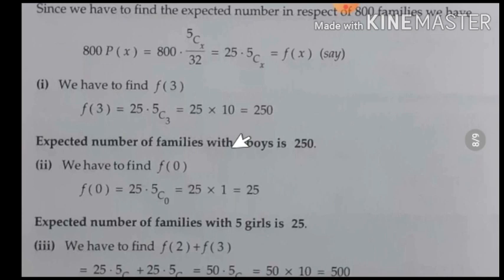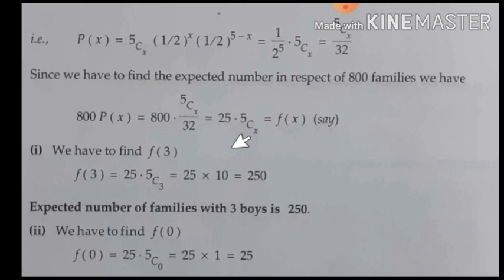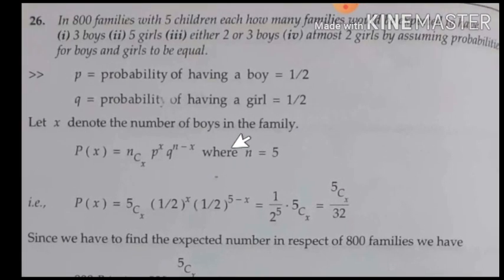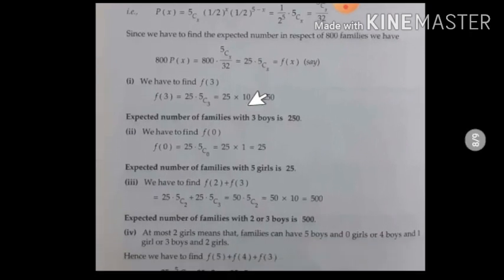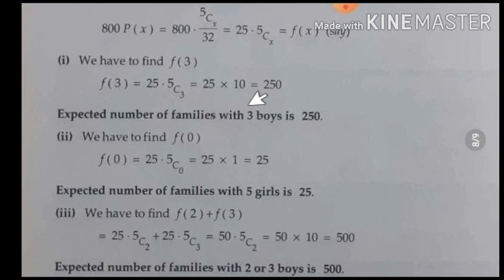For the third condition, either 2 or 3 boys means F(2) + F(3). The 'or' condition means addition. Substituting X=2 and X=3 into the formula and adding the results gives the expected number of families with either 2 or 3 boys as 500.